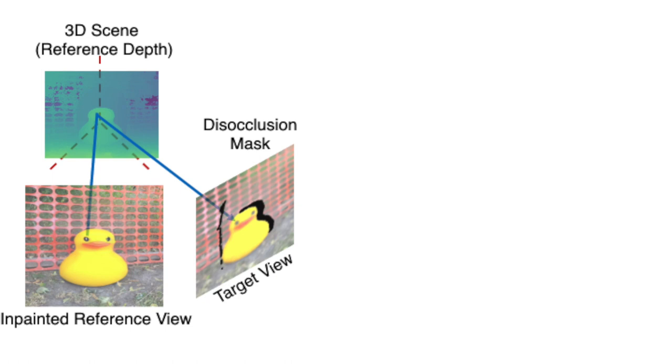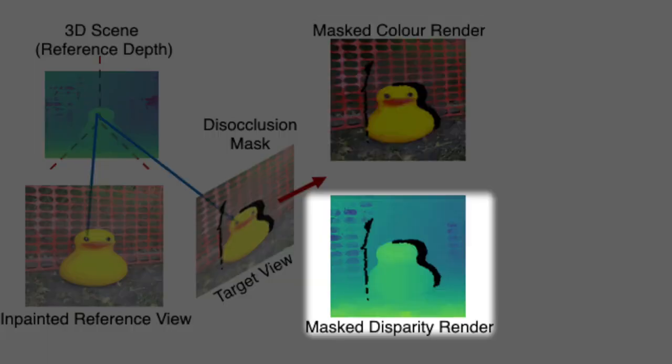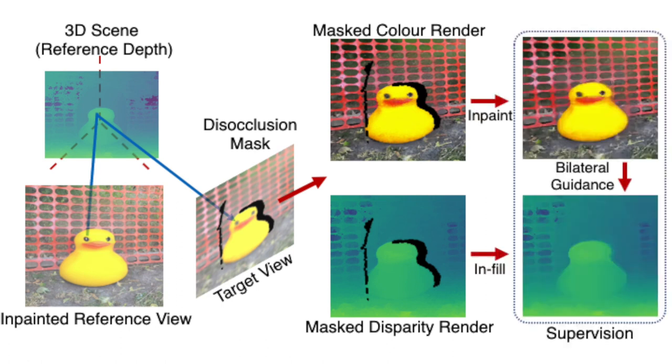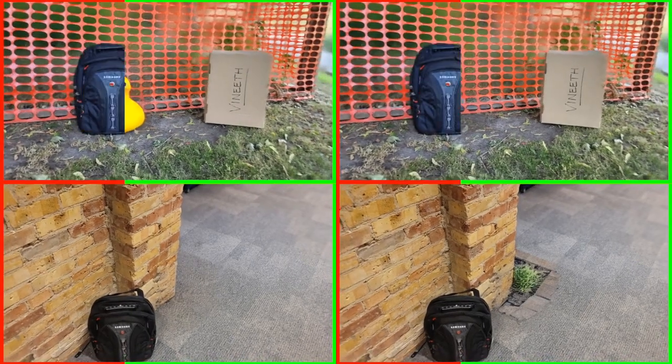However, some pixels of the target view remain unmatched. This gives us the mask of the disoccluded region. This mask is used to inpaint both the appearance and the disparity of the target view, which are then used to supervise the disoccluded region of the inpainted scene. Please see our paper for details and visit our website for visualizations.